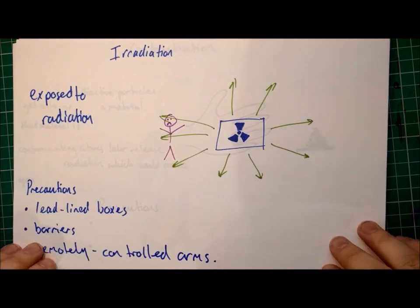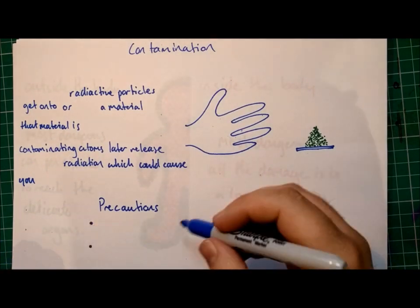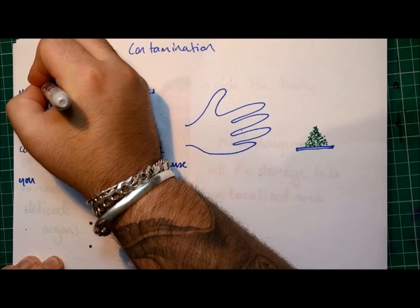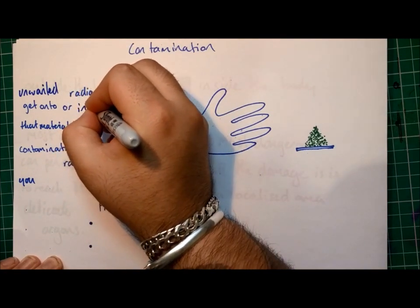Okay, so that's irradiation. Contamination is where unwanted radioactive particles get onto or into a material.